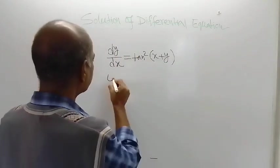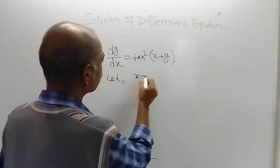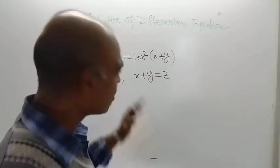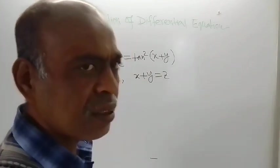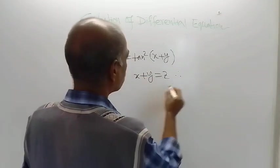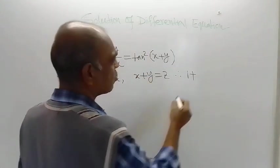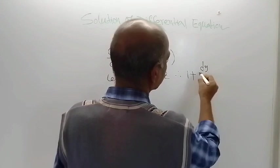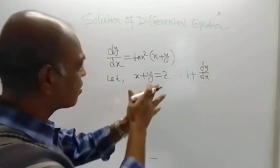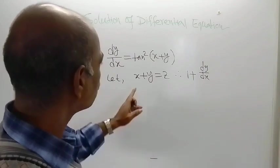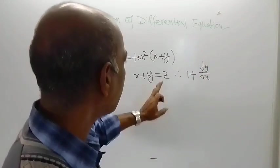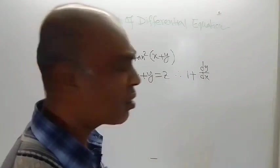So let x plus y equal to z, and now differentiate both sides with respect to x. For the first term we get 1, and for the second term we get dy/dx. That is, d/dx of x is 1, d/dx of y is dy/dx, and d/dx of z is dz/dx.